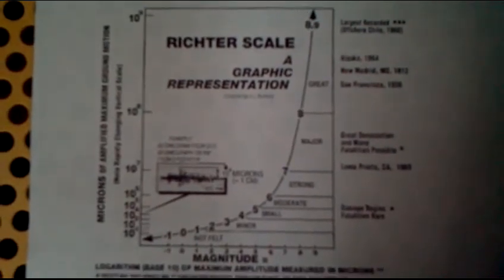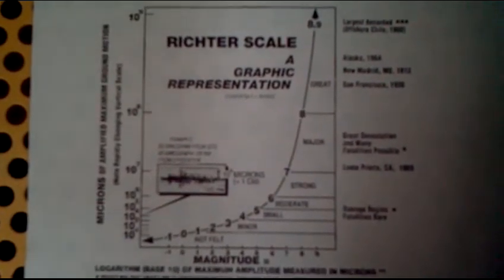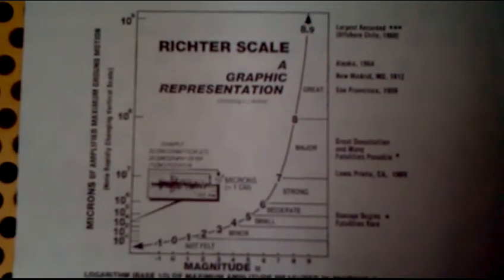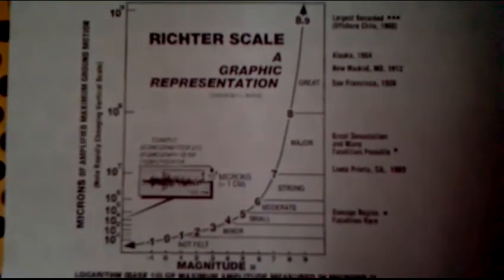This graph of the Richter scale shows the damage each magnitude would create. For example, an earthquake with an 8 on the Richter scale is major, whereas an earthquake with a 4 on the Richter scale is a small earthquake.